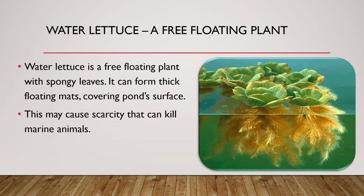Water lettuce is a free-floating plant with spongy leaves. It can form thick floating mats covering the pond's surface, as you can see in the picture. The roots are very dense and it floats over the water. As a result, it may cause oxygen scarcity that can kill marine animals living in the water, since the water lettuce covers the whole pond or lake.